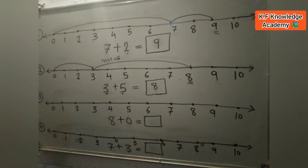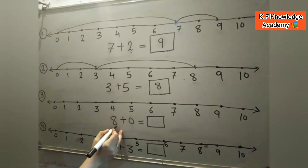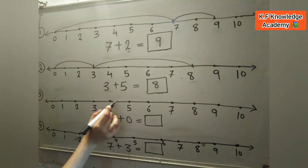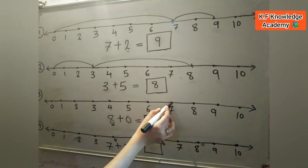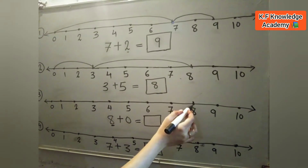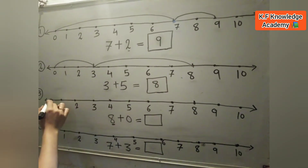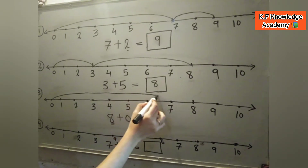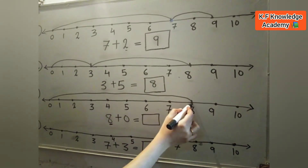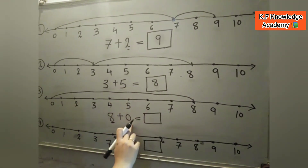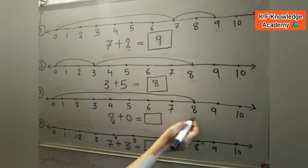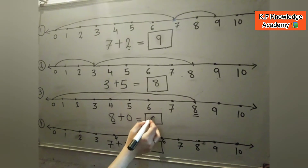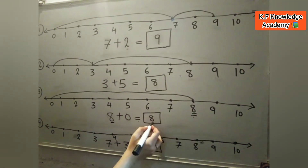In the next question, there is given 8 plus 0. We count 0 to 8 numbers and make a half circle from 0 to 8, plus 0. So 8 plus 0 is equal to 8. We write 8 in the box.